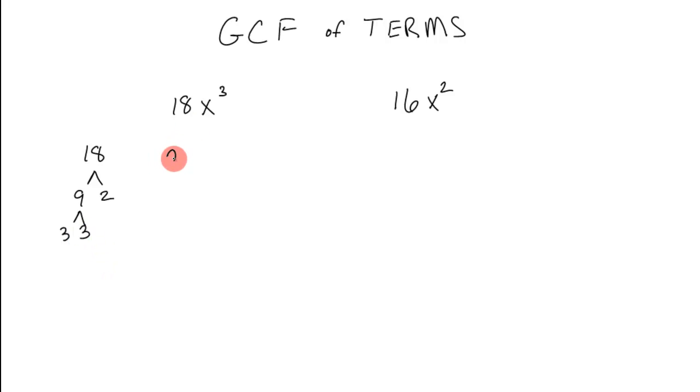I see that 18 is 2 times 3 times 3, and then the x cubed, the x cubed is x times x times x. I'm just factoring it down to what it is based on x cubed.